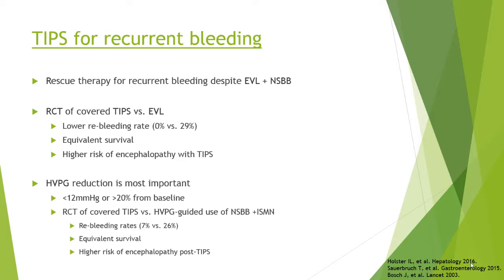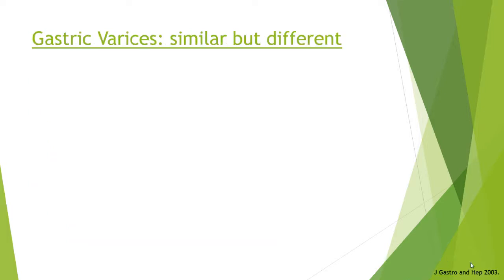TIPS can also be used for recurrent bleeding despite combination therapy of ligation and non-selective beta blockers. Covered TIPS versus endoscopic ligation shows a lower re-bleeding rate with TIPS, equivalent survival, and a higher risk of encephalopathy post-TIPS. The hepatic venous pressure gradient target post-TIPS is under 12 mmHg or a greater than 20% reduction from baseline. If the post-TIPS gradient is still around 20, the patient remains at high risk for decompensation.